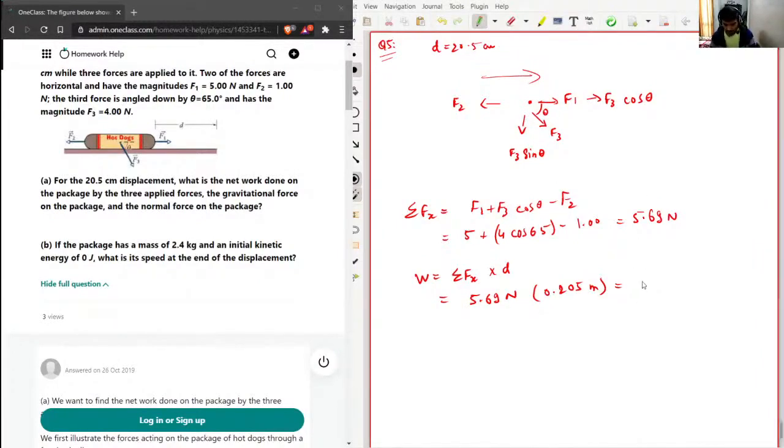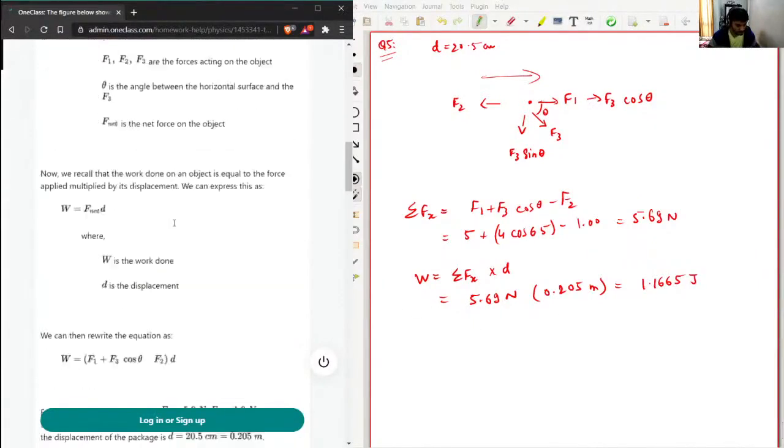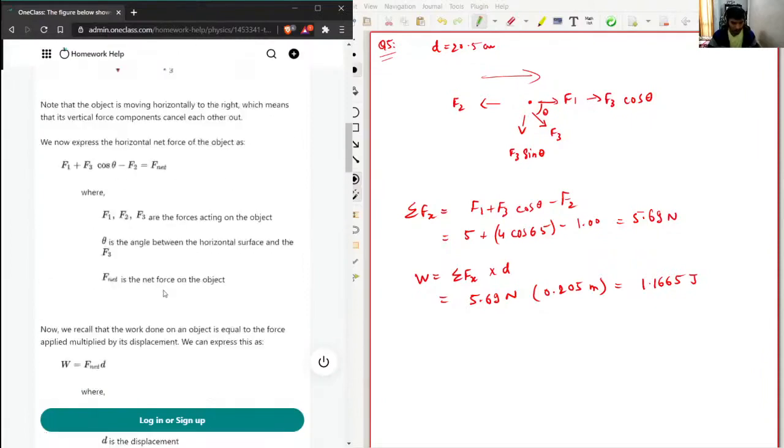So it is 1.1665 joules. So this is 1.1665 joules. I'll just cross-check this with the solution here. Okay, so 1.166, they have 1.17.